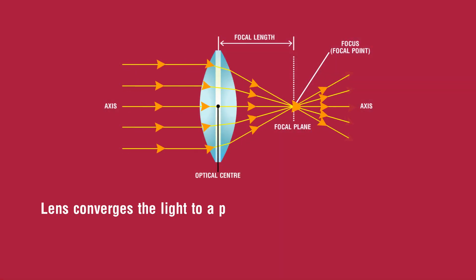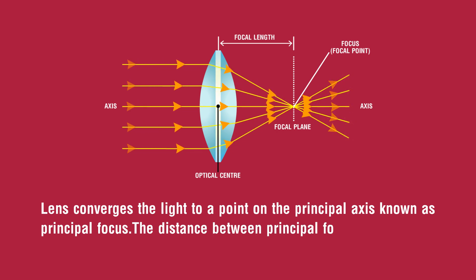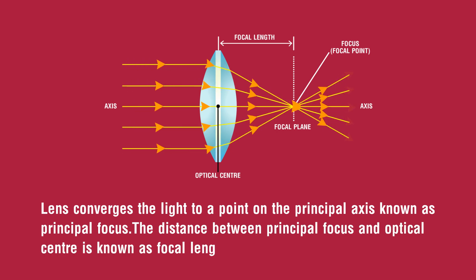A lens converges light to a point on the principal axis known as the principal focus. The distance between principal focus and optical center is known as focal length.